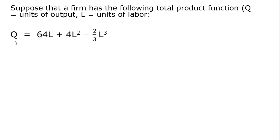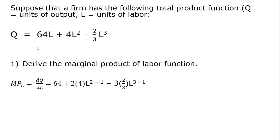So here is our total product of labor function, Q is quantity of output, L is units of labor. And what we want to do is derive the marginal product of labor function. And to do that, we are going to take the derivative of the total product function with respect to labor.